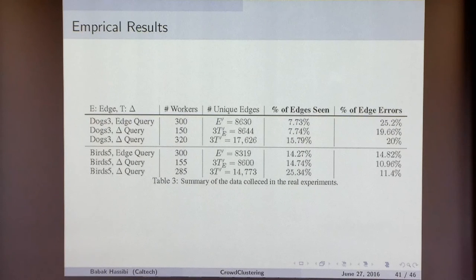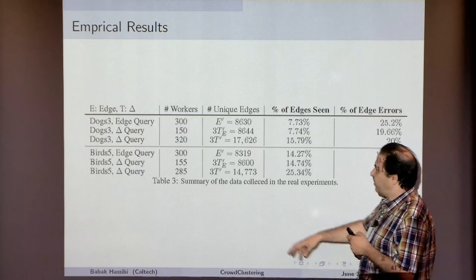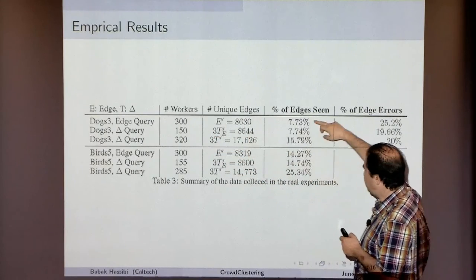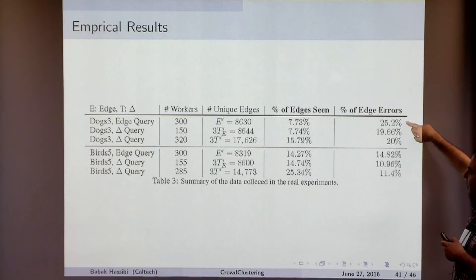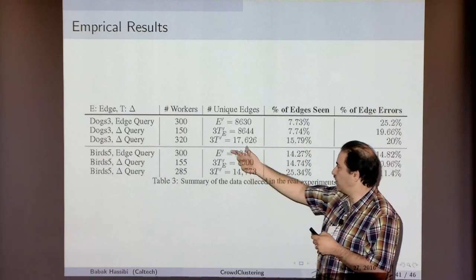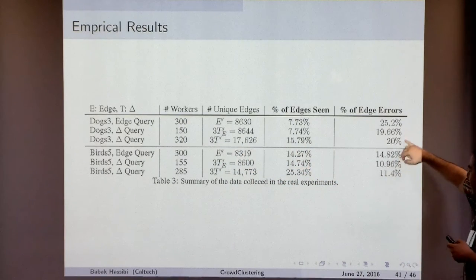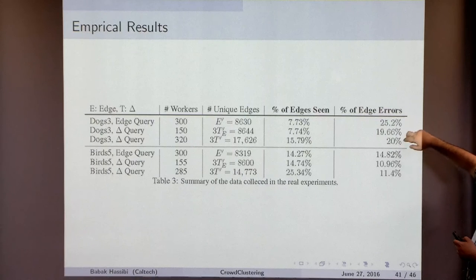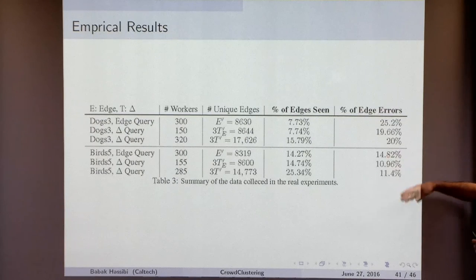Let me show some empirical evidence. For dogs: with 300 workers doing edge queries, we see about 7.7% of edges and the error rate is 25%. Normalizing to cost, triangle queries let you see twice as many edges, and the edge error rate drops from 25% to 20%. For birds, similarly, error goes from 14% to about 11%. The clustering works better with triangle queries for both birds and dogs.